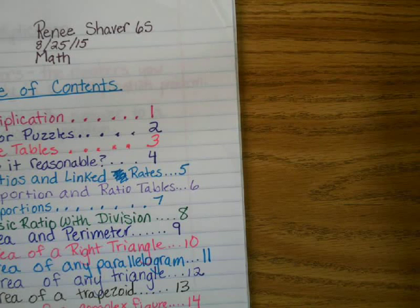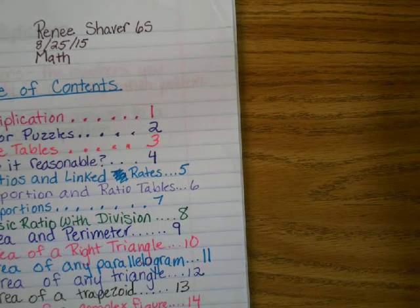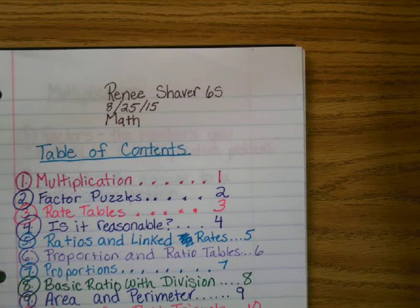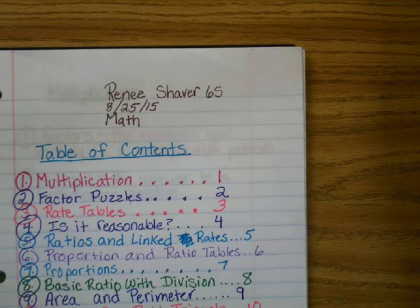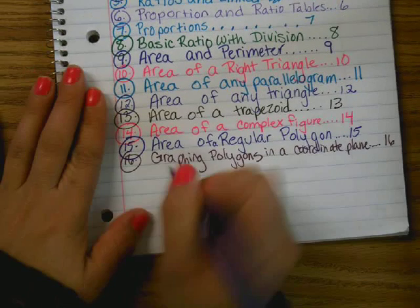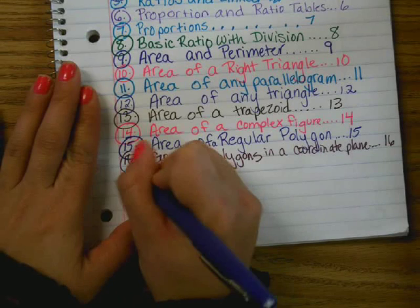All right, underneath your table of contents. Guys, we're starting. Dominic, Emily, come on. Table of contents. We are on to number 17. Write down 17. Circle it.